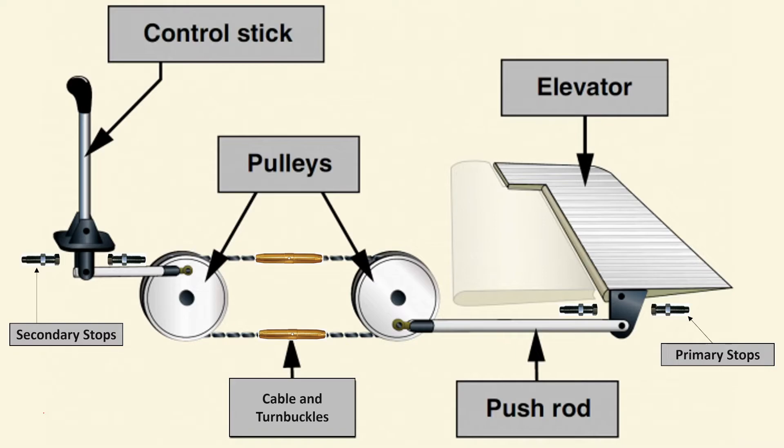Once your neutral is done, getting your deflection up and down is easy. You just adjust the primary stops. The primary stops are going to limit your deflection. It's a hard mechanical stop. The bell crank, when this elevator goes up, it's going to contact against the primary stop here. And the bell crank, when the elevator goes down, it's going to contact against this primary stop. These stops are adjustable.